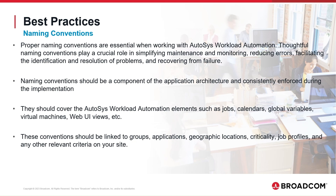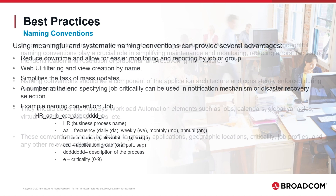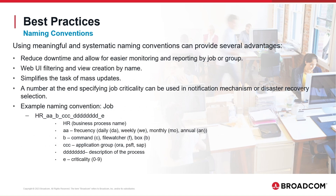These conventions should be linked to groups, applications, geographic locations, criticality, job profiles, and any other relevant criteria on your site. Naming conventions can provide several advantages such as reducing downtime and allowing for easier monitoring and reporting by job or group. Web UI filtering and view creation by name simplifies the task of mass updates. Using a number at the end specifying job criticality can be used in notification mechanisms or disaster recovery selection.